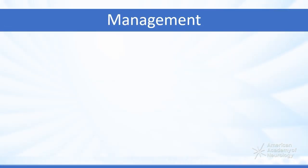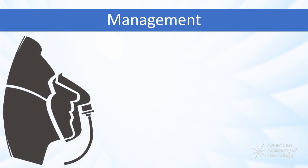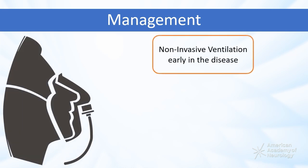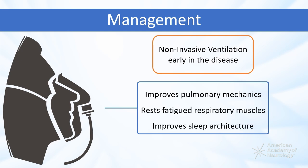Current guidelines for management of patients with neuromuscular respiratory weakness recommend using non-invasive ventilatory support early in the disease course. This improves pulmonary mechanics, helps rest fatigued muscles, and improves sleep architecture.